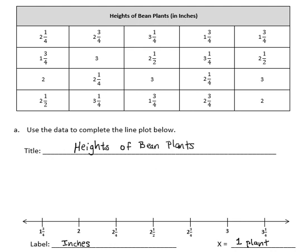Now, I'll go back to the first number in my chart. It's 2 and 1/4 inches. I just need to find that mark on my line plot and put 1 x to represent that plant. I'm going to check it off so I know that I don't skip any of the plants.